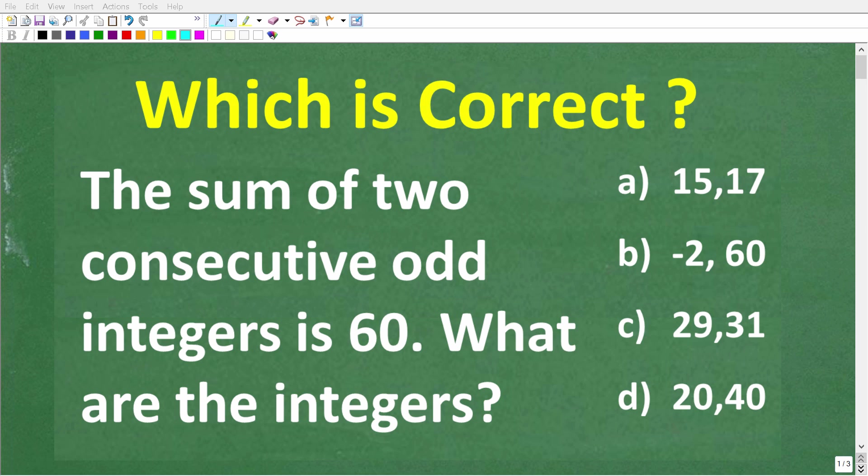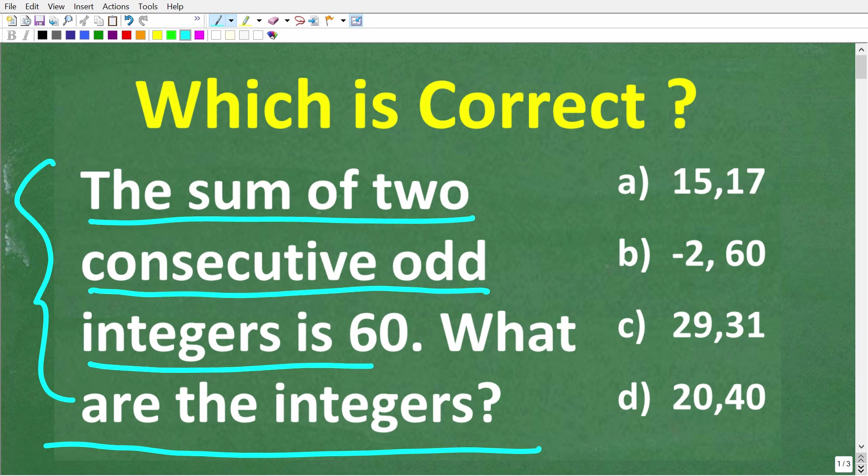You don't even need to understand this entire problem to get the right answer. So let's take a look at the question. The sum of two consecutive odd integers is 60. What are the integers?